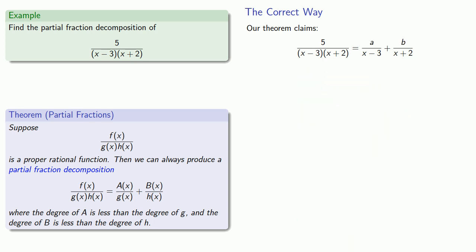We'll multiply both sides by the common denominator (x - 3)(x + 2) and simplify down to a final expression.